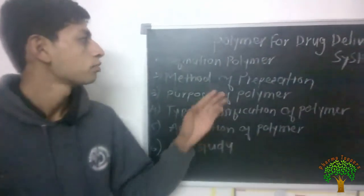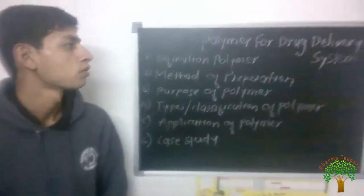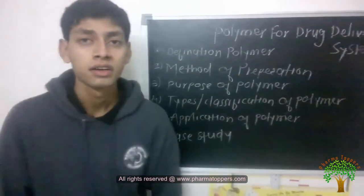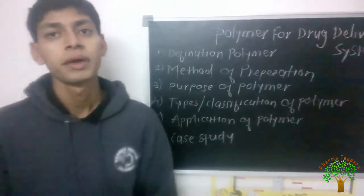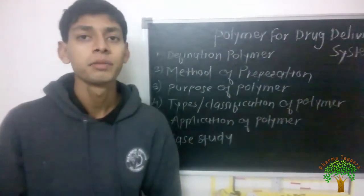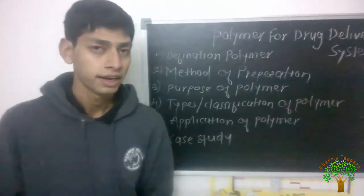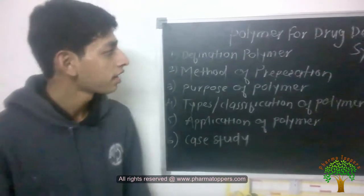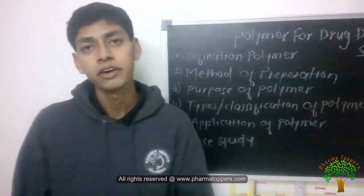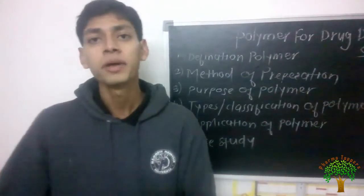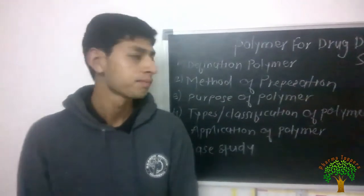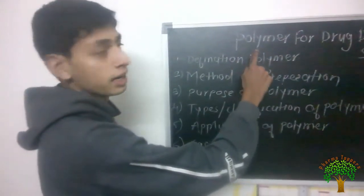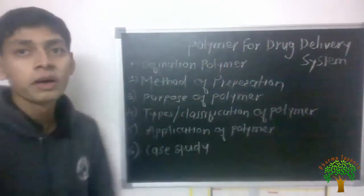Today I am going to explain about polymers for drug delivery systems. Polymers are macromolecules mainly made up of smaller molecules called monomers. A number of monomer units undergo the process of polymerization to form a polymer. The word polymer itself tells us: poly means many and mer means parts, so it is composed of many parts.